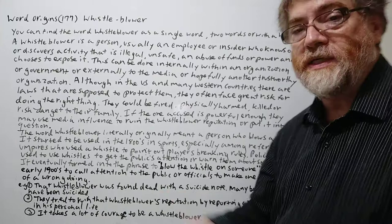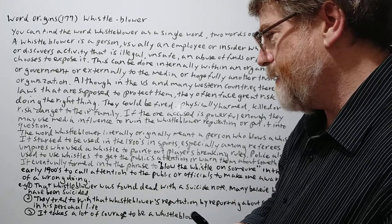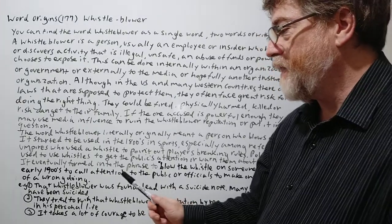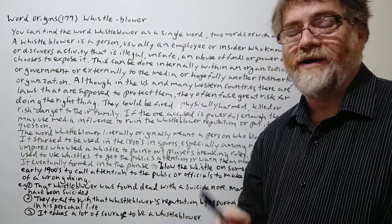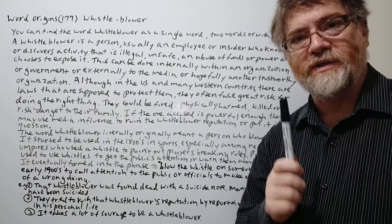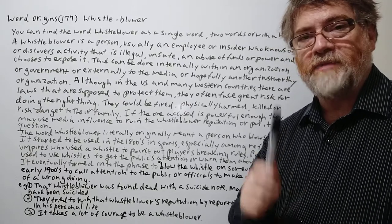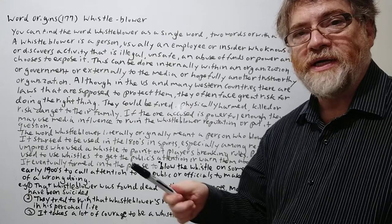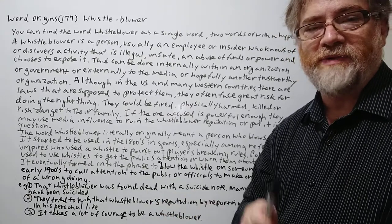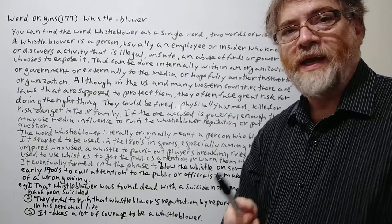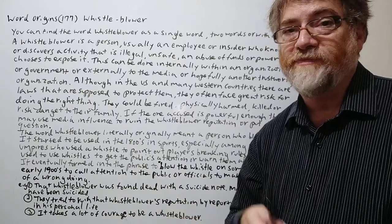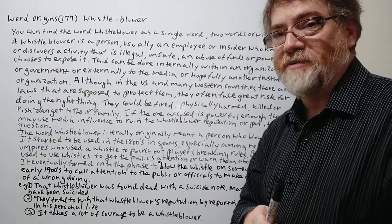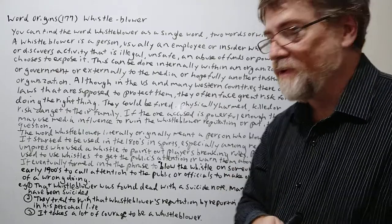Here are three examples. Number one: 'That whistleblower was found dead with a suicide note. Many believe that he may have been suicided.' Suicided does not mean you really committed suicide — it means you were murdered and somebody tried to make it look like suicide. They set it up to look like you were upset and then murdered you so they could get off. If there's no accuser, remember the proverb: dead men tell no tales.